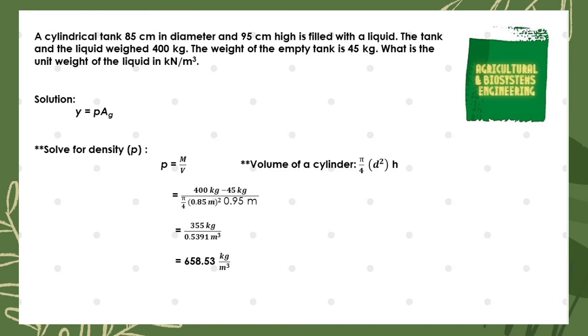We just solve it, having now our mass to be 355 kilograms divided by the volume of 0.5391 cubic meters. We just get the quotient and the final value for our density is 658.53 kilograms per cubic meter.